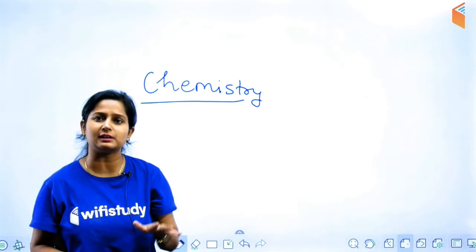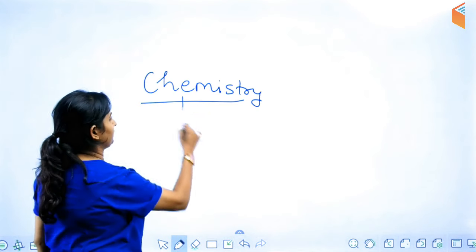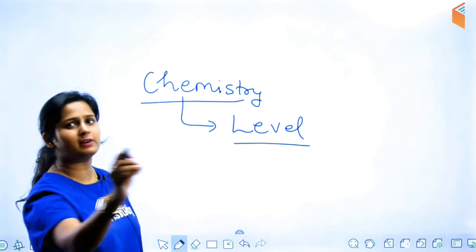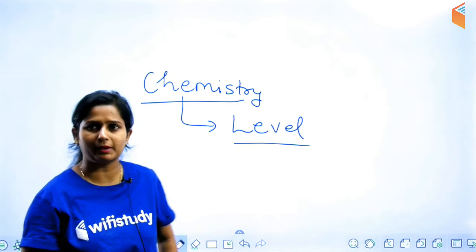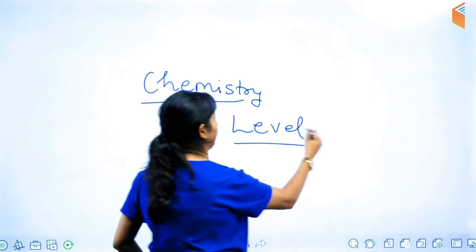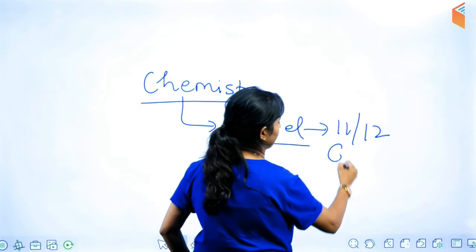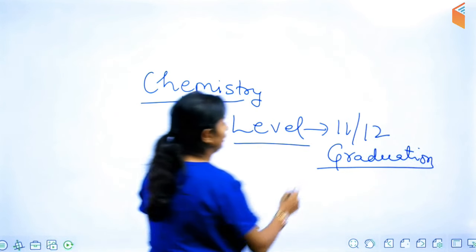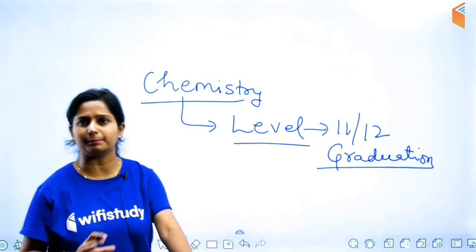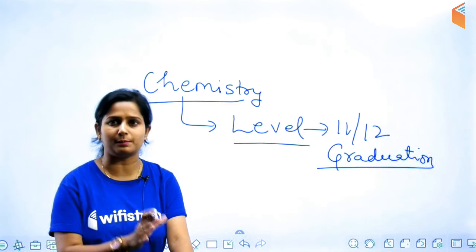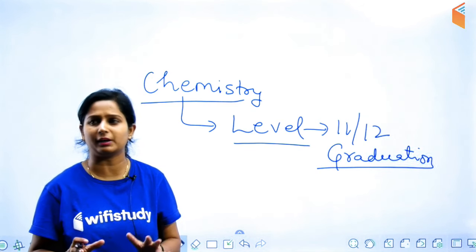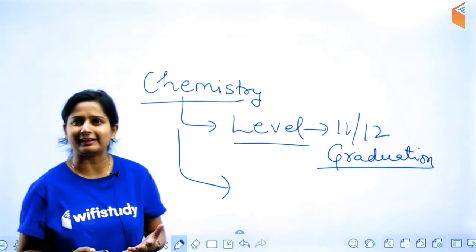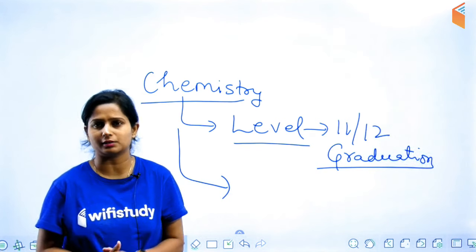When you complete the CMA syllabus in chemistry, you need to expect a higher level. This is not the level of CBT-1 — this is the level of 11th and 12th class. Some topics that are not covered in detail in 11th and 12th are covered at graduation level, and those graduation-level topics have been included here. Since it is technical, you can expect this portion.